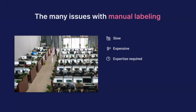Third, expertise is required. Some tasks are easier — like classifying cats and dogs, which you can outsource to random people. But most of the time in enterprises, there are use cases that really require the expertise of specific people, so you can't just outsource elsewhere. Fourth, there's the challenge of privacy. In healthcare, patient data needs to remain private and must be labeled in-house. In finance and many other industries, privacy is also critically important.